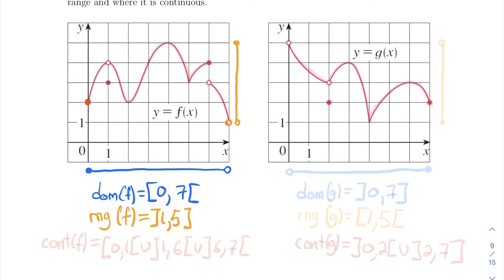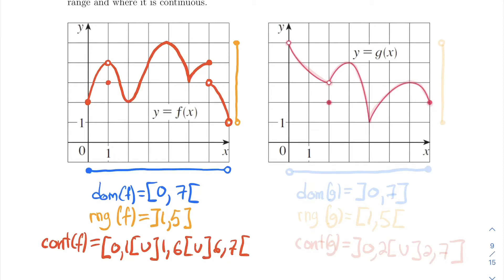We start at 0 — we can draw the point at 0, then trace the graph all the way up to 1 without lifting the pen. But at 1 there's a hollow dot, and we need to lift the pen to draw that fat dot. So the function is not continuous at 1. From 1 we can trace all the way up to 6, but even with a full dot at 6, we need to lift our pen to go to the second branch — so it's not continuous at 6 either. And it's not continuous at 7 because 7 is not part of the domain. So the continuous domain is from 0 to 1 excluding 1, union 1 to 6 excluding 6, union 6 to 7 excluding 7.